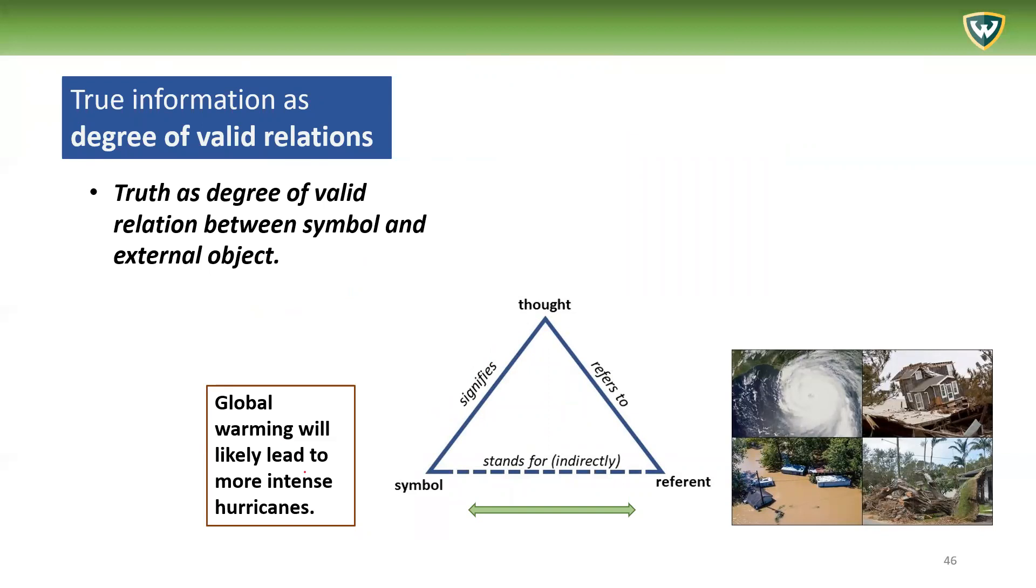Now, the true relation can also be between the symbols themselves and the external object in the world. Now usually, as we said, there's always a mental concept, but we can see that these symbols here - global warming, likely more intense hurricanes - actually stand for all the consequence and the actual more intense hurricanes that are observed in objective real reality. And that's a valid relation.